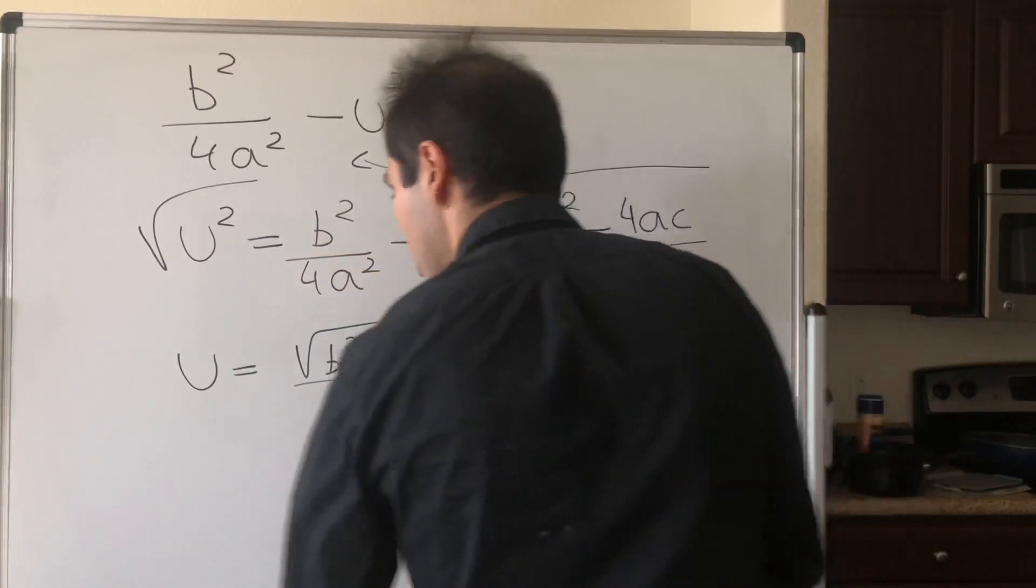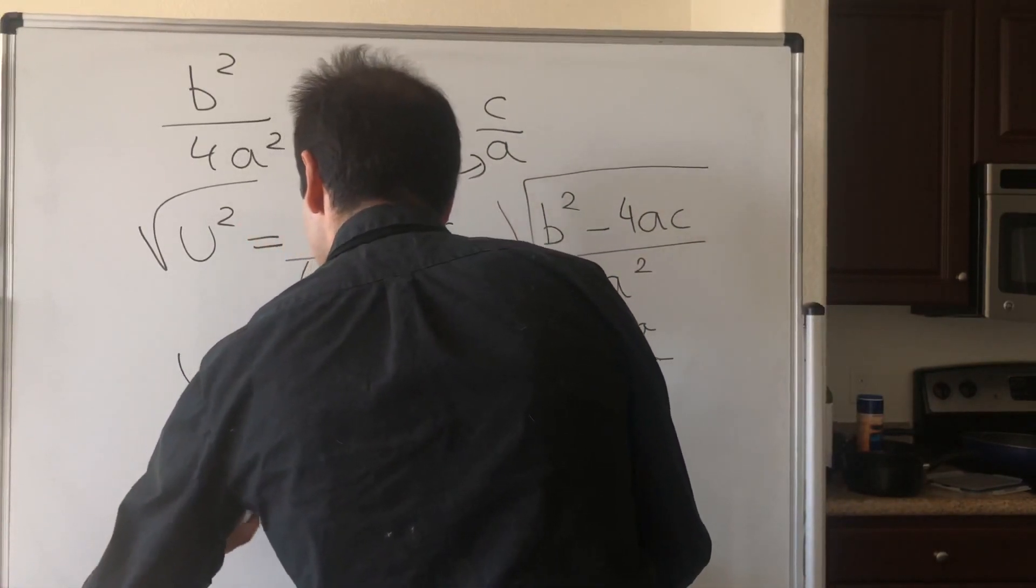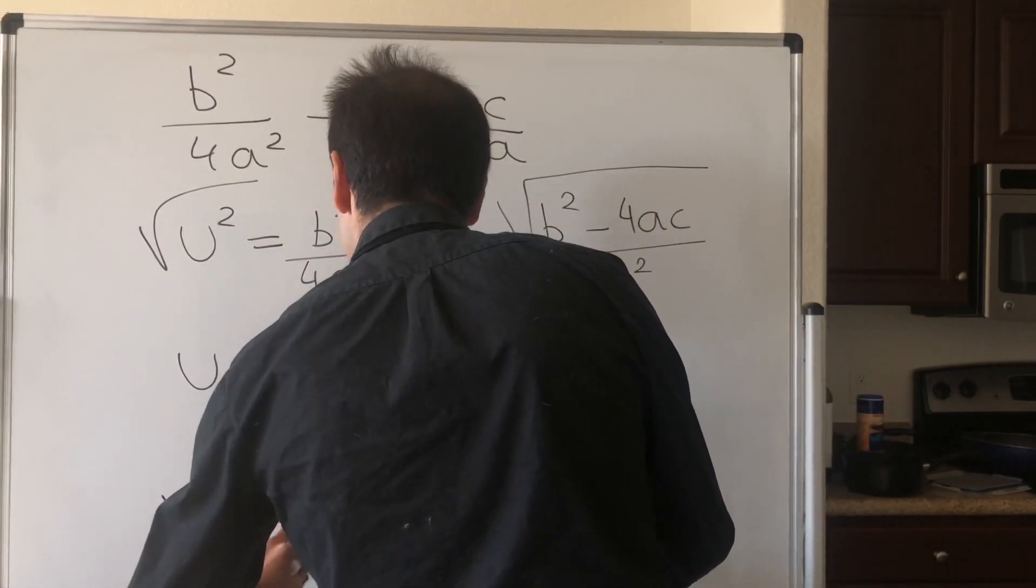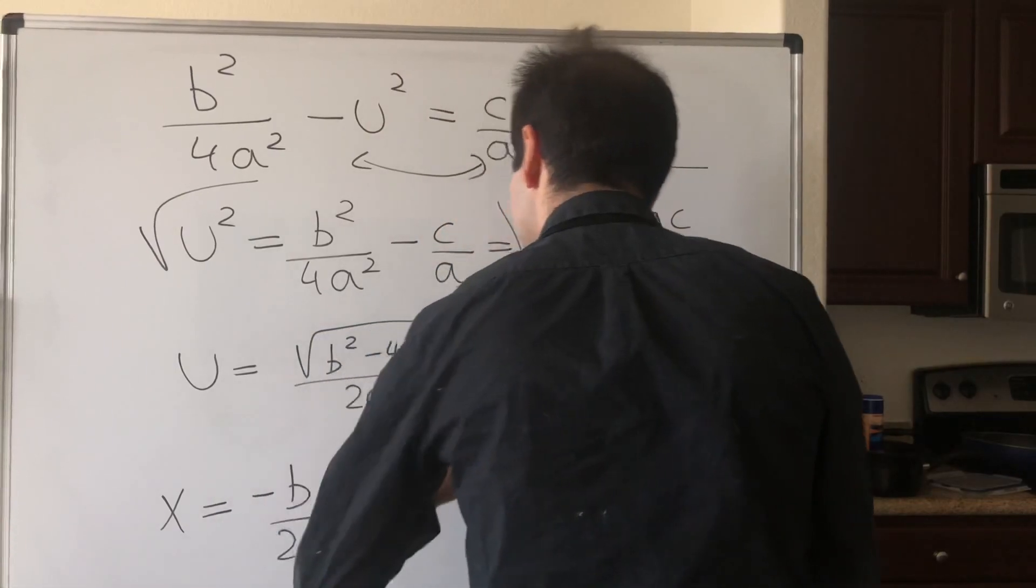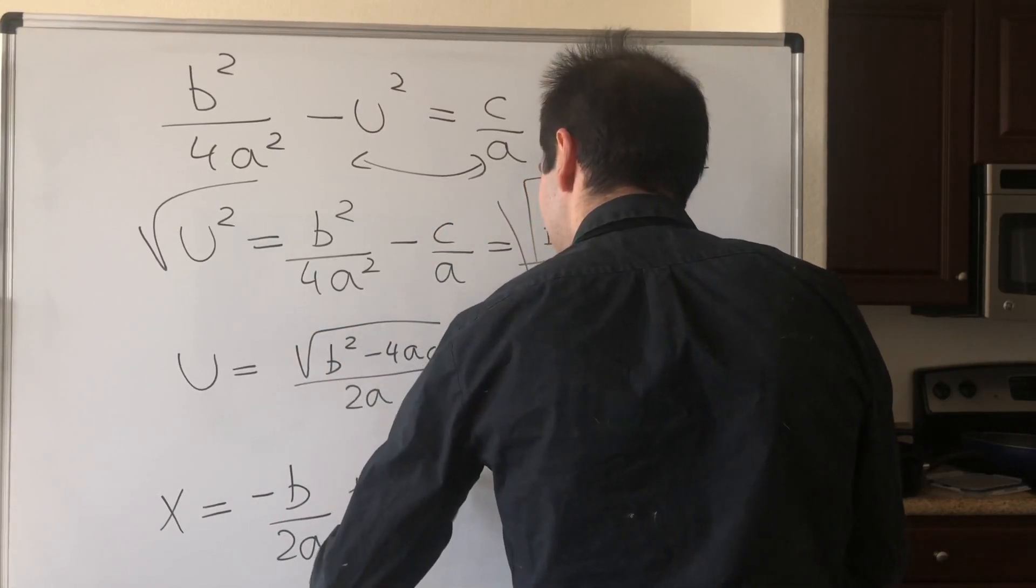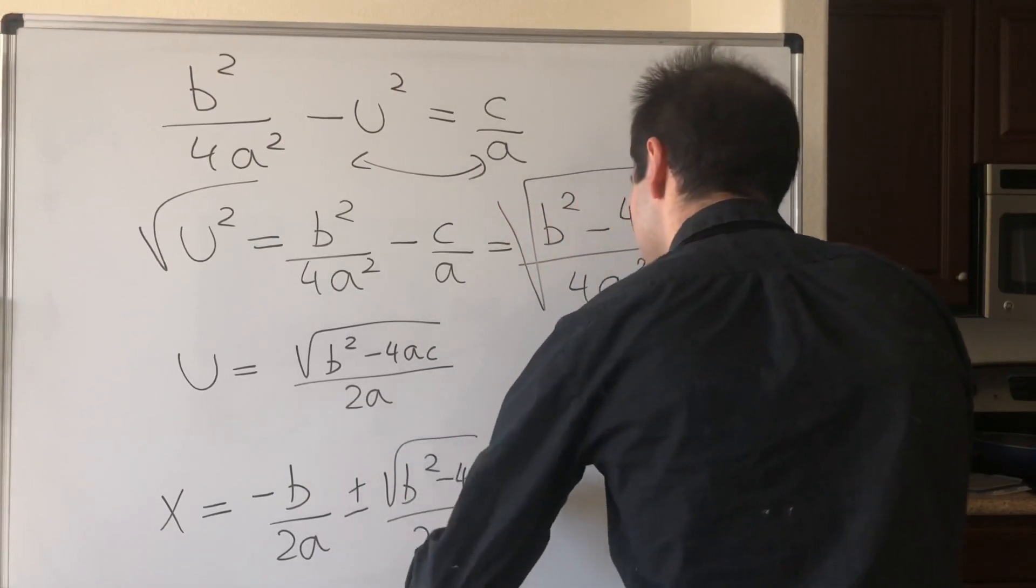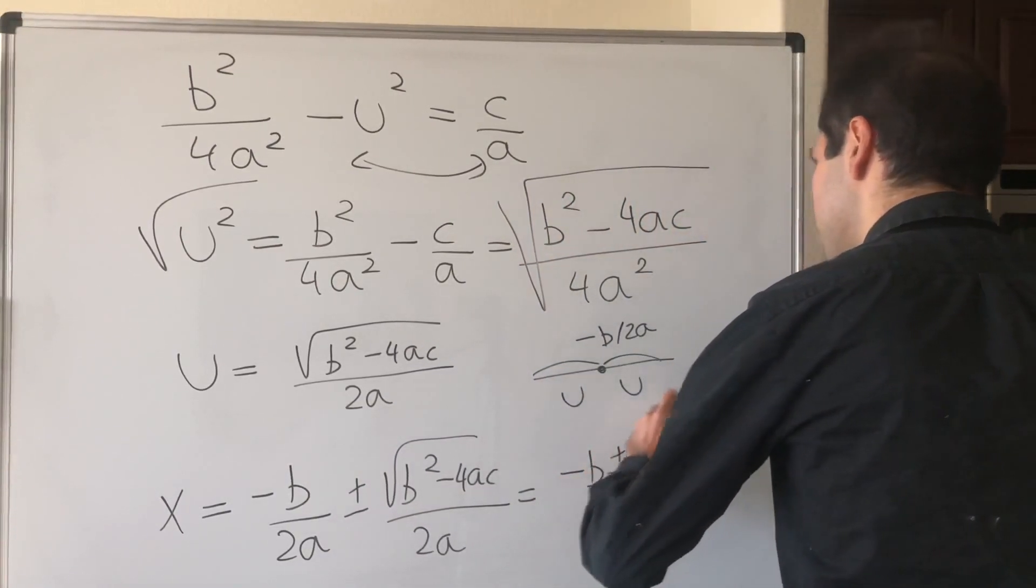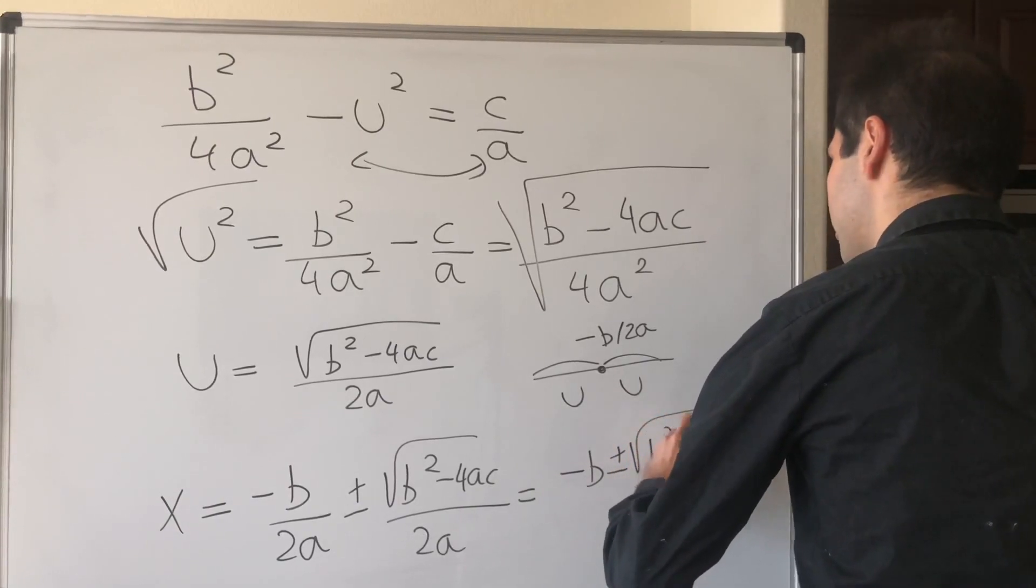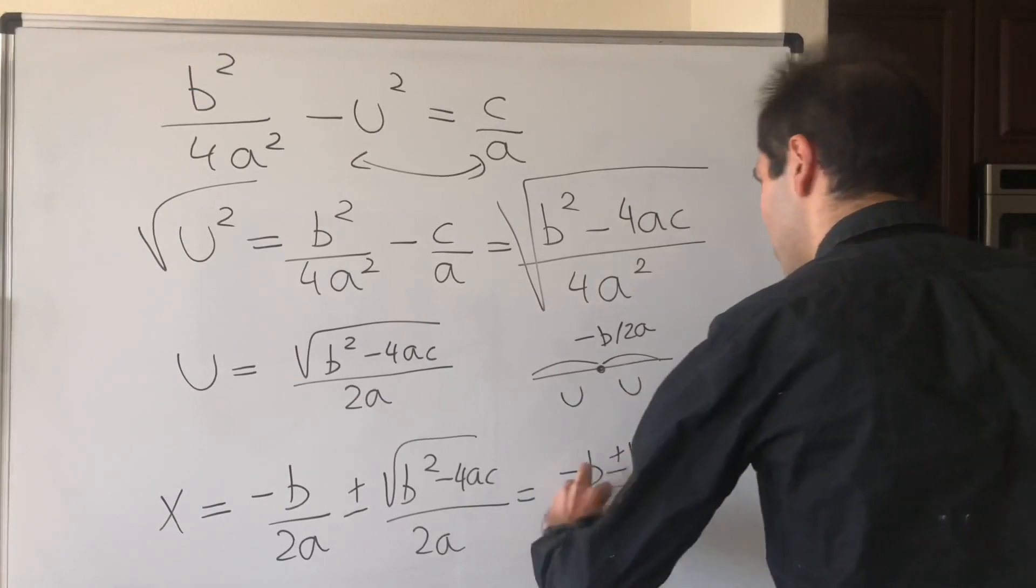In particular, our roots are -b/2a ± √(b² - 4ac)/2a. That's (-b ± √(b² - 4ac))/2a.